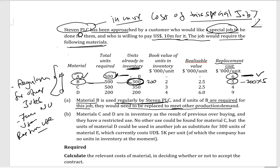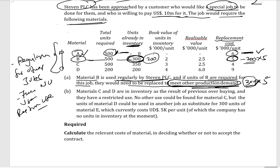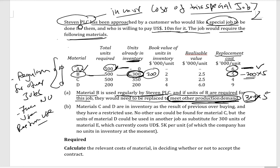Since Material B is used regularly, those 300 units cannot be taken straight for the special job — they need to be replaced to meet other production demand. So the relevant cost is again the replacement cost. You need to purchase all 500 units at $5 per unit, giving a total of $2,500.